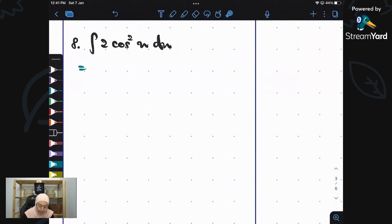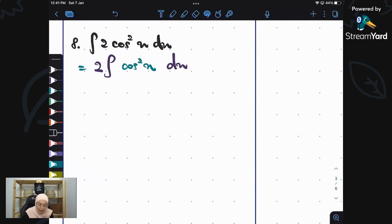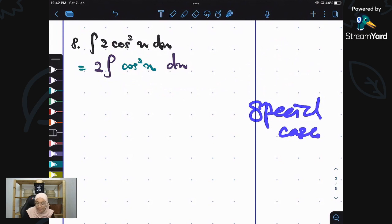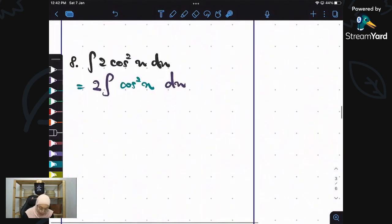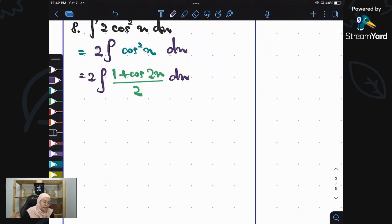Integrate 2 cos squared X dx. This number 2 needs to be brought outside. So I bring the 2 outside. What remains inside is only cos squared X dx. And so you've got to remember there is the formula for cos squared. For integrate of cos squared there is a formula, we call it special case. Integrate cos squared is 1 plus. So let's write it down.